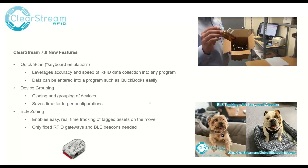The quick scan or keyboard emulation allows you to type data into any application. We've done videos of scanning RFID tags into QuickBooks or other applications that may not have had RFID scanning built in — and you can add RFID scanning using this keyboard emulation within Clearstream. It's really easily configurable. The great thing about it is that it supports any device that Clearstream RFID supports — Zebra readers, Impinj readers, Alien or other readers — any one of those can be used as keyboard input into a pre-existing system.